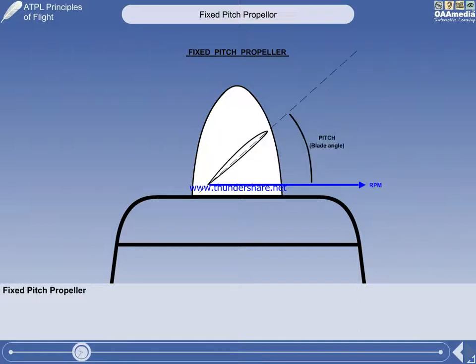So that we can see some of the factors that affect the efficiency of a fixed-pitch propeller, we have replaced the plane of rotation with a vector of propeller RPM. A propeller fitted to the piston engine of most light aircraft will rotate at the same speed as the engine.